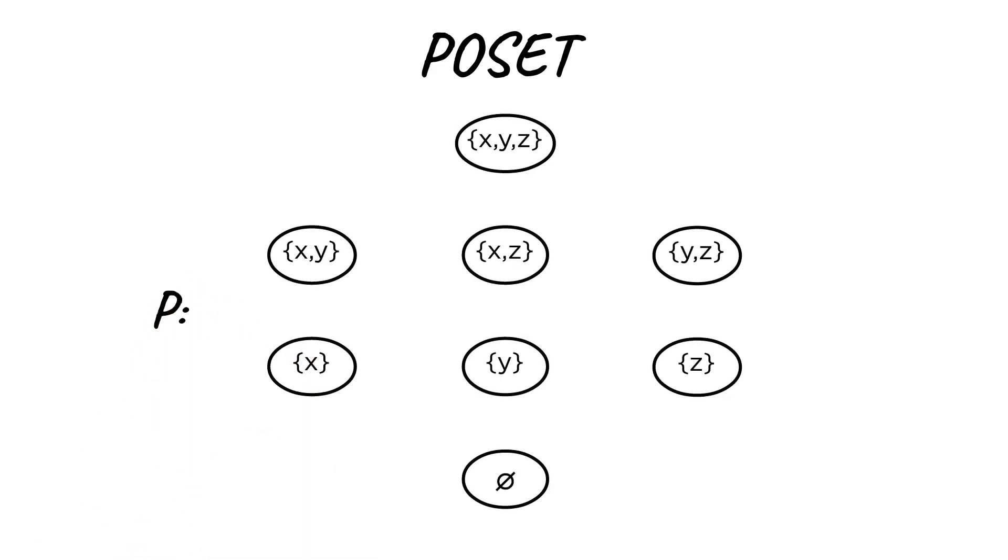A partially ordered set, or PoSet, is a set whose elements are ordered, but not all pairs are comparable.